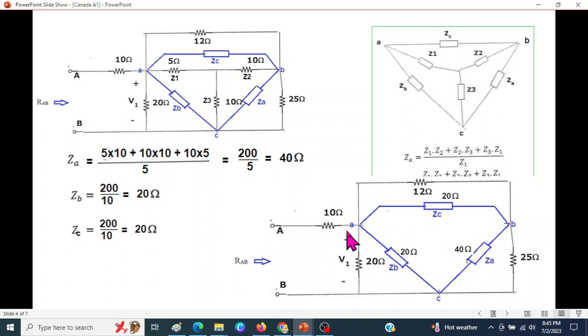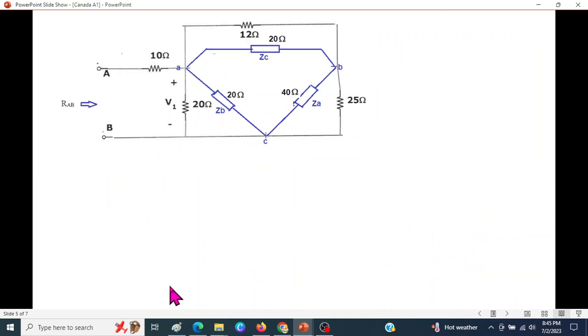Now our equivalent circuit will be like this: ZA 40, ZB 20, and ZC 20. If you look carefully, these two are in parallel. Similarly, these two are in parallel at the same point, and these two are also in parallel.